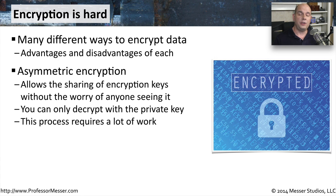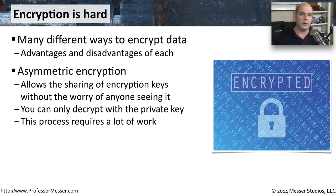With asymmetric encryption, there are actually two keys. There's a private key that nobody gets to see, and there's a public key that you could send to everyone — that everyone in the world would have access to. You can share this public key and not worry about anyone gaining access to it, because you can't decrypt information with the public key; you can only decrypt information with the private key.